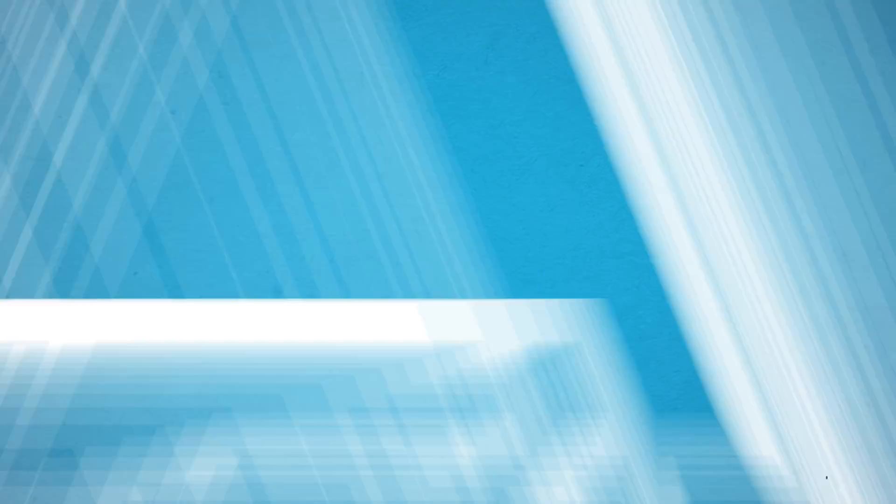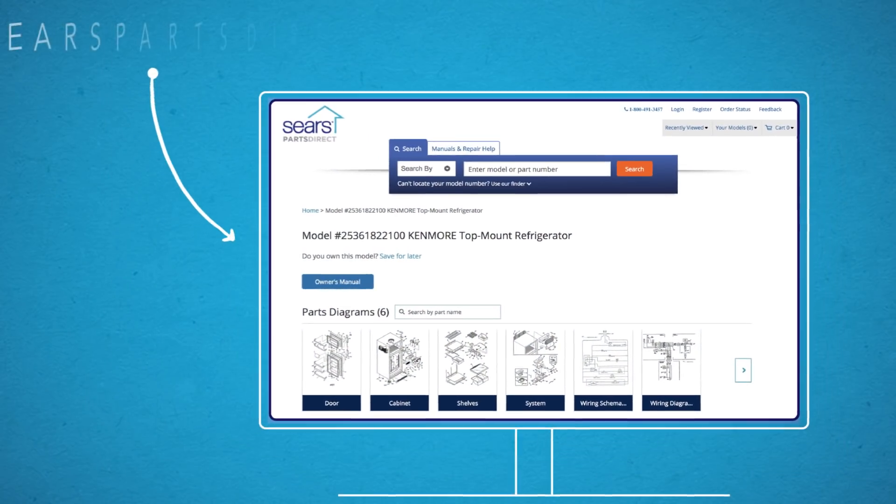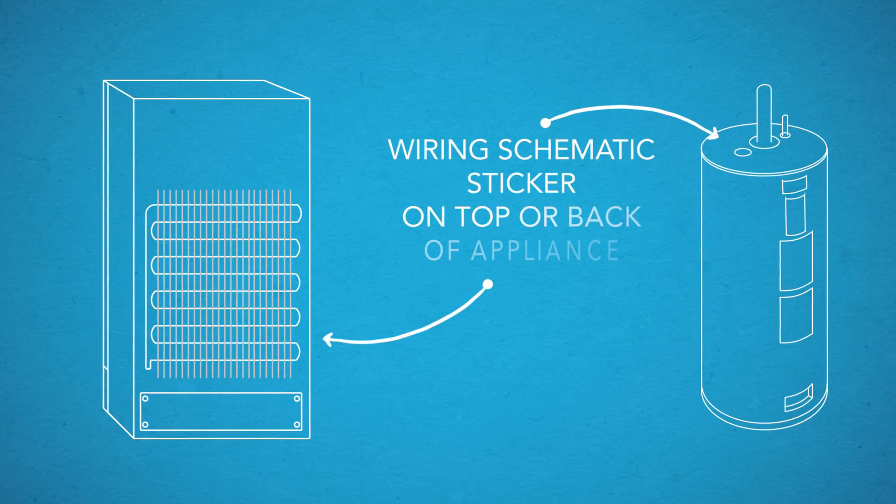First things first, where do you find the wiring schematic on your appliance? You can find some right on the Parts Diagram page of SearsPartsDirect.com. Some appliances have a sticker on the top or back of the cabinet that shows the wiring schematic.